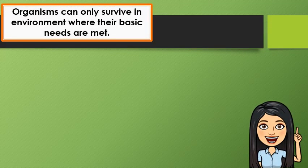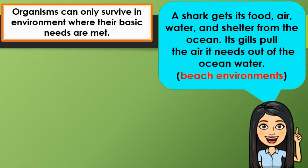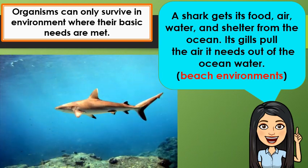Remember, organisms can only survive in an environment where their basic needs are met. For example, a shark gets its food, air, water, and shelter from the ocean. Its gills pull the air it needs out of the ocean water. So this is an example of a shark that lives in a beach environment.